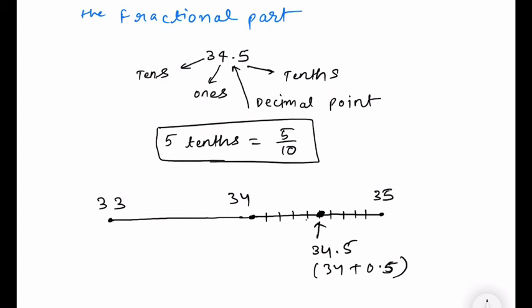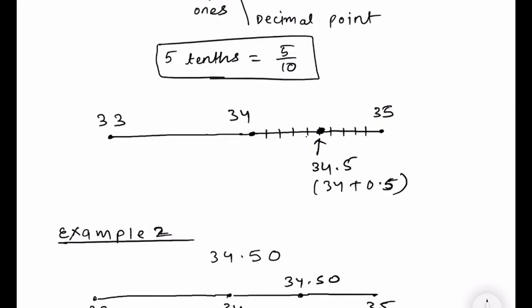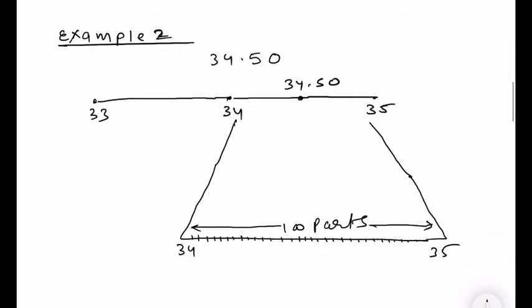Suppose there is a number line: 33, 34, and 35. When you add one to 33 you get 34, and when you add one to 34 you get 35. But if you don't want to add a whole one, you divide one into ten parts and add only five out of ten parts — then you will get 34.5.